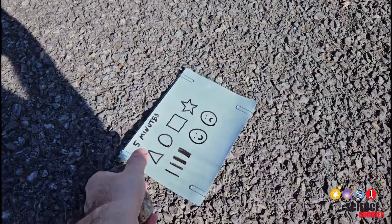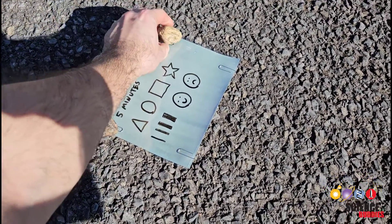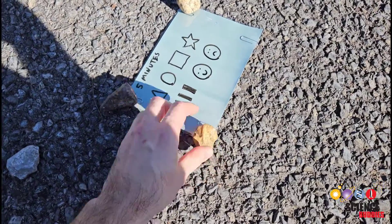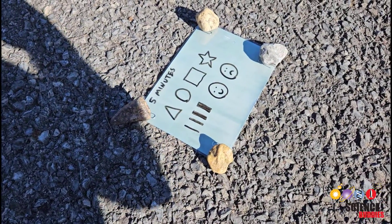Place the paper outdoors in direct sunlight and start a timer. If it's a windy day, weigh the corners down with rocks or other heavy objects. Make sure the transparency stays flat against the photosensitive paper with no gaps between them.